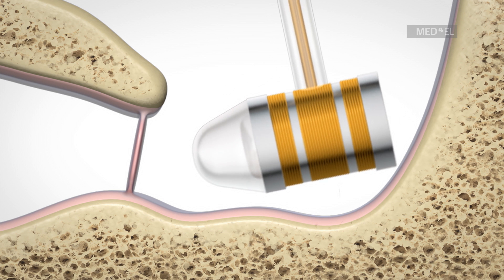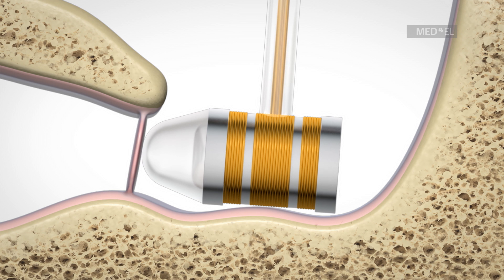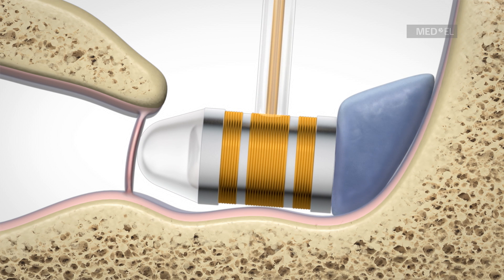The round window soft coupler is for placement on the round window membrane. It is stabilized by inserting a piece of cartilage behind the FMT assembly.